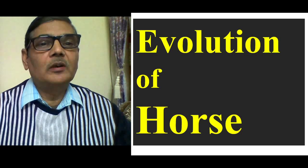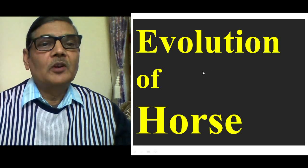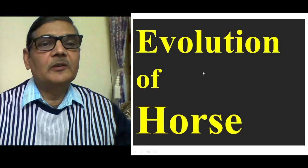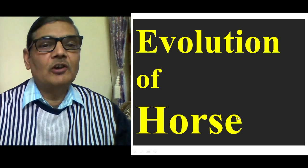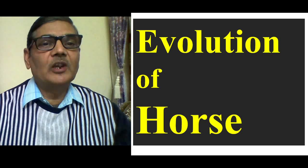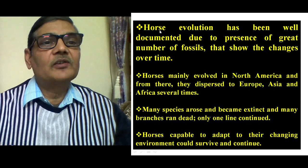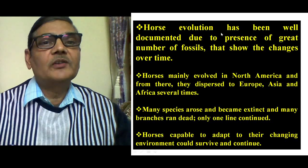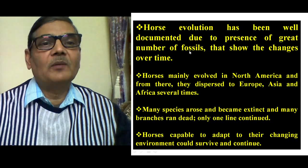The evolutionary pattern of a number of animal species is available because their fossil remains have been obtained. The horse is one such animal whose evolutionary aspect has been dealt with very nicely, because fossil remains are available in very good form and shape. Horse evolution has been well documented due to the presence of a great number of fossils that show changes over time.